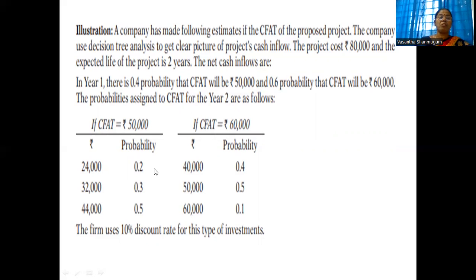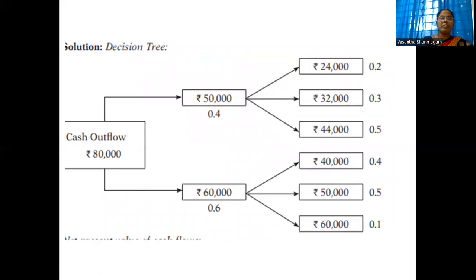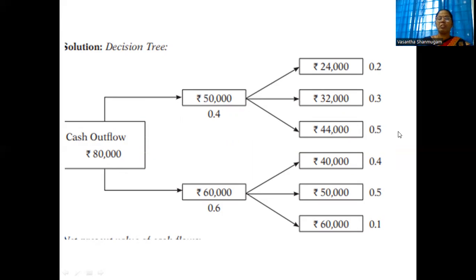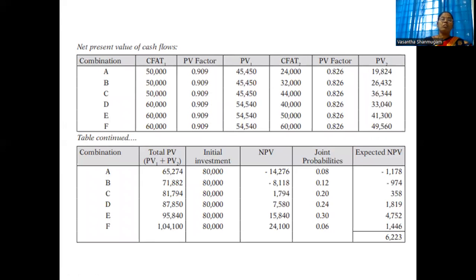From the 60,000 branch in Year 2: probability of receiving 40,000 is 40%, 50,000 is 50%, and 60,000 is 10%. The probability values are: 0.2, 0.3, 0.5 for the first branch and 0.4, 0.5, 0.1 for the second. There are six combinations in total. The firm uses a 10% discount rate for this type of investment.